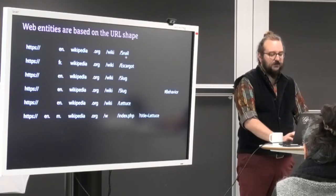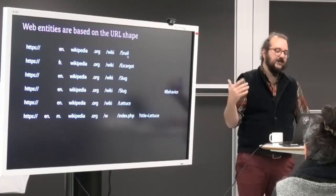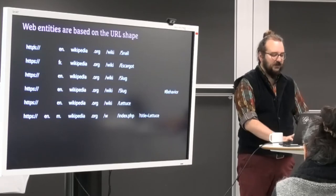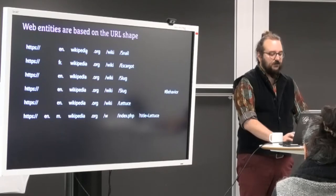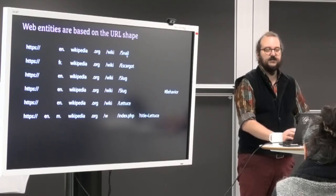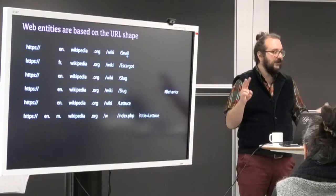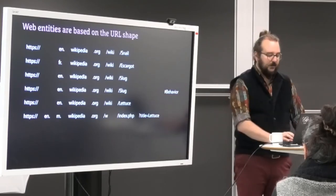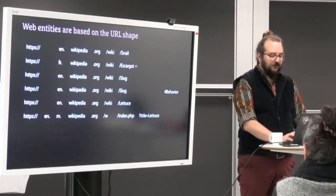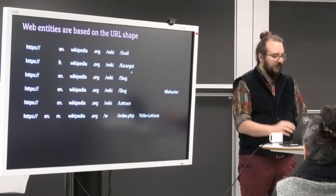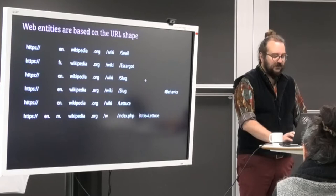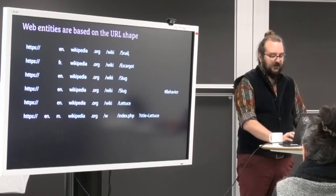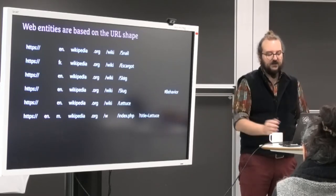This first URL is the Wikipedia page in English on snail. It works like that, https. S means secure. en, because it's in English, wikipedia.org slash wiki slash snail. All the Wikipedia articles are in slash wiki slash something. Now the second line is the French Wikipedia page on the snail, which is escargot in French. We eat them. And then we don't eat them. The slug. So two pages. One is for the slug. So it's built like for the snail. It's in English, right? So you just have slug instead of snail.